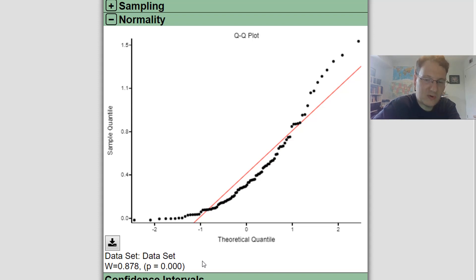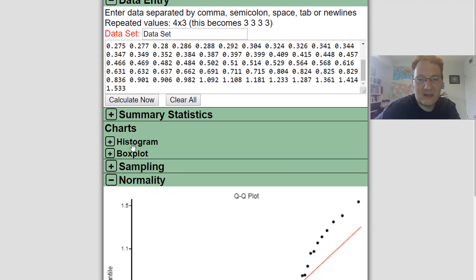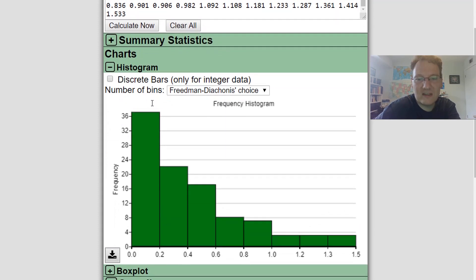The p-value is so close to zero it rounds to zero. So it is an emphatic reject. We reject the null hypothesis, therefore we can be pretty sure this data is not drawn from a normal distribution. And in fact, if we looked at the histogram, we would see this is an exponential distribution. That's where I drew it from.